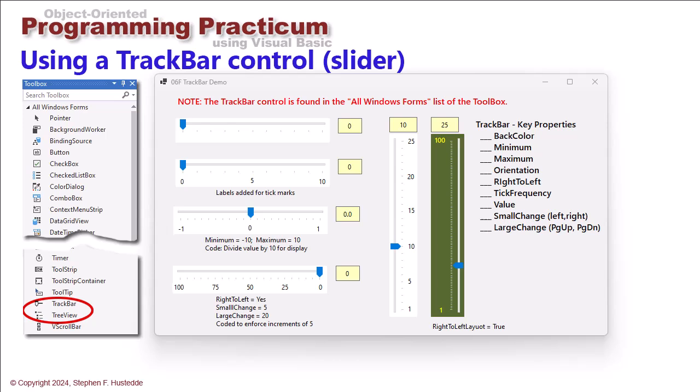Some of the key properties for the track bar are the back color. You can see on the very last one here on the right hand side I changed the color to dark olive. The minimum and maximum represent the range of numbers that we can choose from and these are integers.